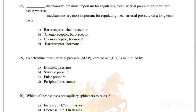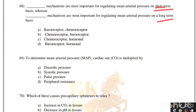The dash mechanisms are most important for regulating mean arterial pressure on the short-term basis and long-term basis. Baroreceptor mechanisms are most important for regulating mean arterial pressure on a short-term basis, and hormonal mechanisms for long-term basis. Correct answer is option D, baroreceptor and hormonal mechanisms.